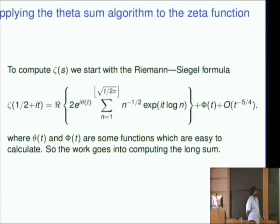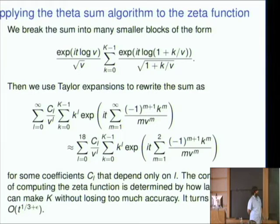And you can apply this to the zeta function. So the Riemann-Siegel formula looks something like this. And so we need to evaluate this long sum in the middle. This theta and phi there are some functions that are pretty easy to compute, at least nowadays. So the focus all goes into the sum. This is where the t to the 1 half running time comes from. But what you can do is break this sum into many small chunks that look like that on the top. And then, ignoring a lot of calculations, you use Taylor expansions on the logarithm and on the square root to write it like this.